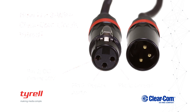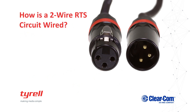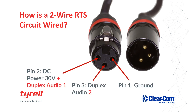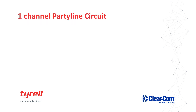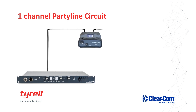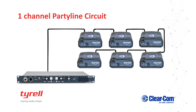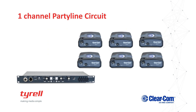Hence the "clear" in Clearcom. There is another 2-wire system in place which was designed by RTS. They have managed to add another audio duplex signal onto pin 2. However, this results in a noisier line, but you do get the benefit of an extra channel per line if you are willing to forgo that noise. If we look at the actual 2-wire or party-line circuit, you'll see that the XLR line is daisy-chained from belt pack to belt pack. And much like the party-line circuit we discussed earlier, all the belt packs connected to that line will be able to hear and converse with one another at the same time.